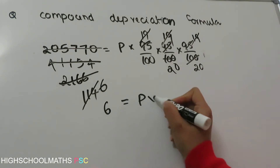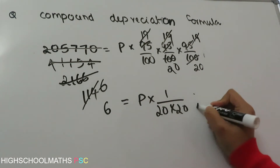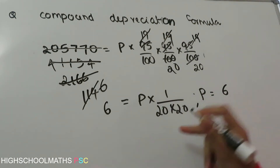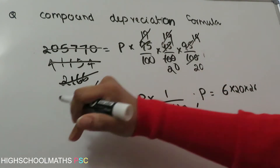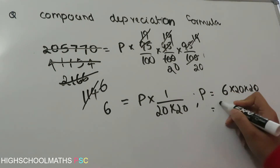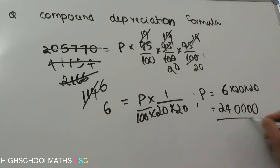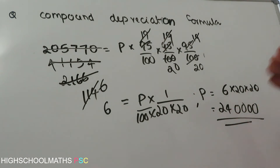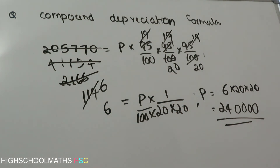After dividing and simplifying, we get P equal to 2,40,000. The original value of the auto rickshaw at the beginning of 3 years is Rs. 2,40,000.